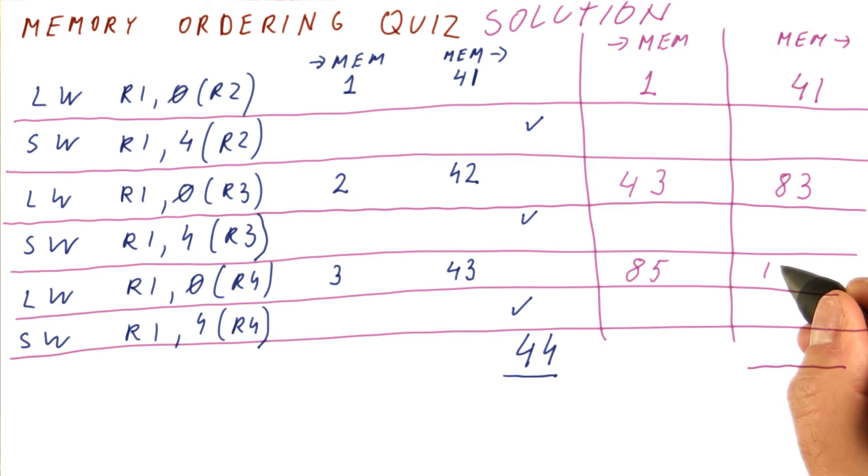It's going to be cycle 125 by the time it comes back. And finally, the final store can be done in cycle 126.